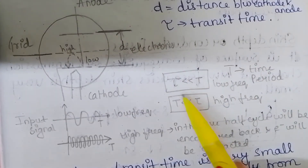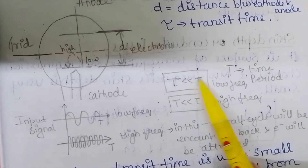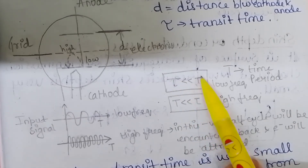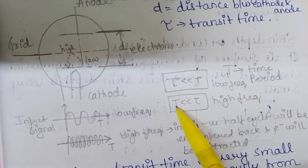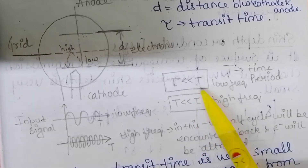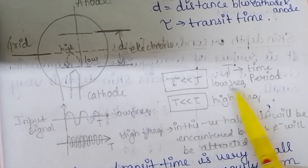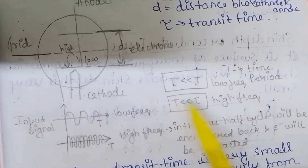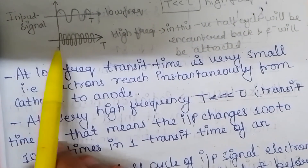There are two conditions: first, τ << T, where T is the time period and τ is the transit time — this occurs at low frequency. Second, T << τ — this condition occurs at high frequency.